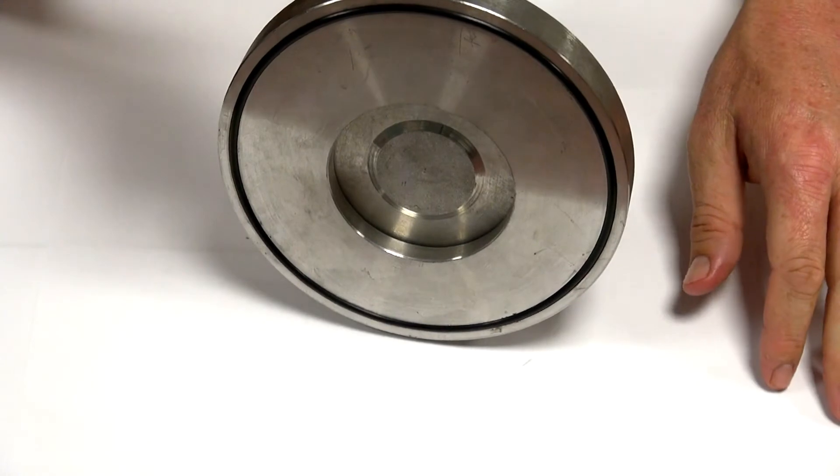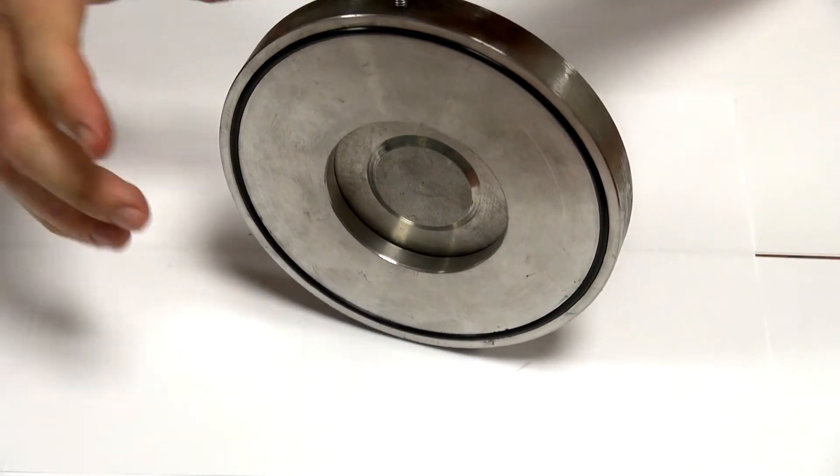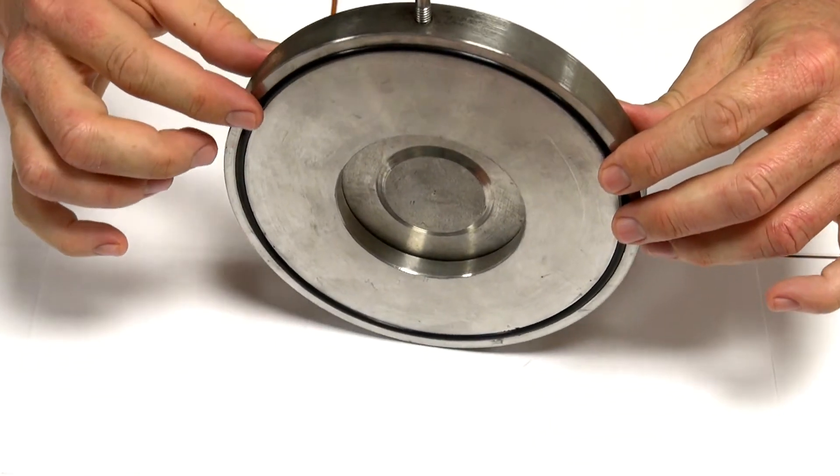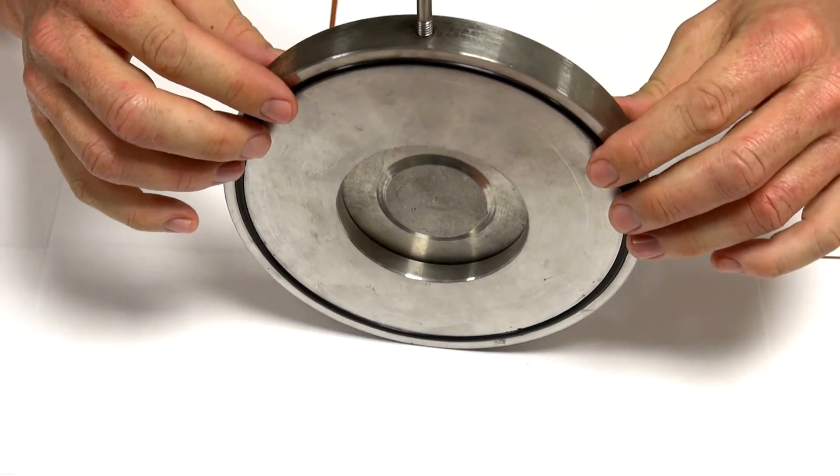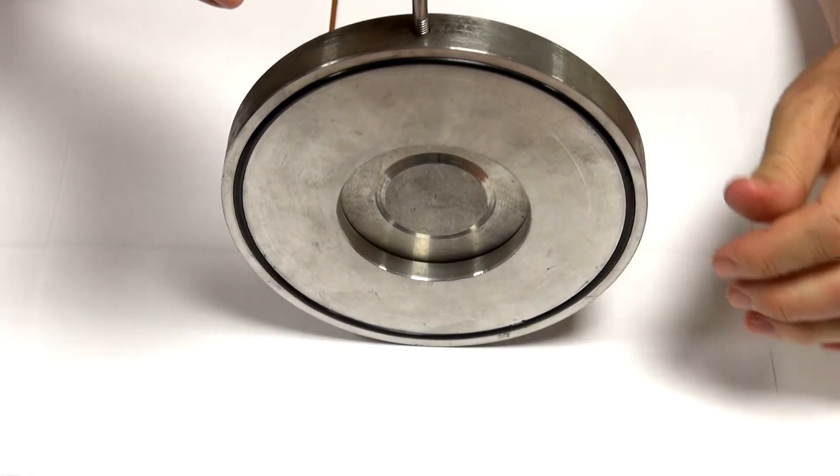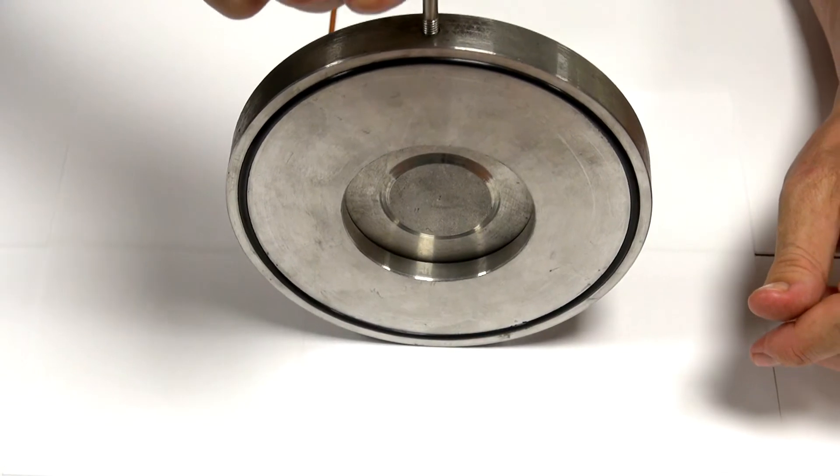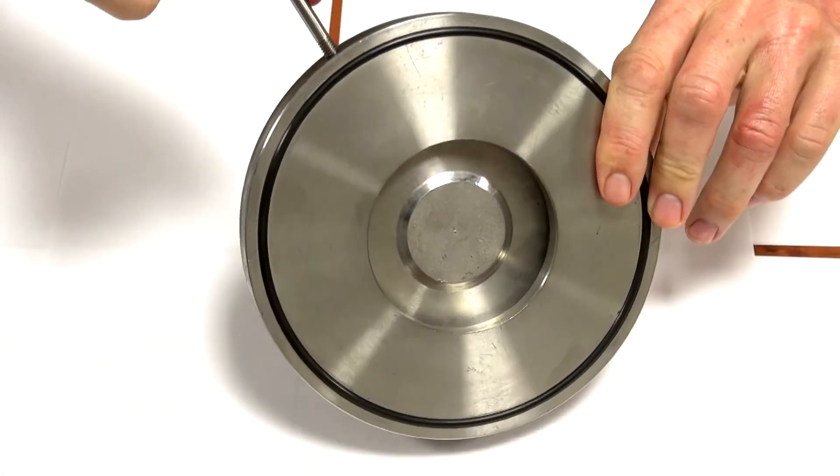Now this is mounted between flanges so you'd have a flange either side and that seals on this o-ring seal here and is clamped in place. This lug at the top is purely for lifting or mounting.